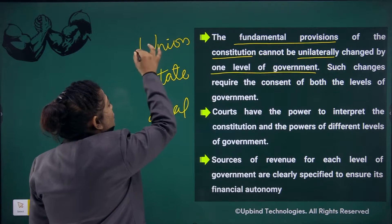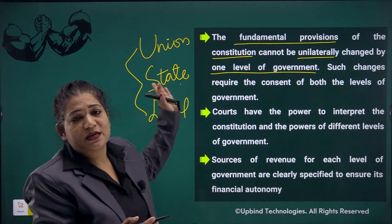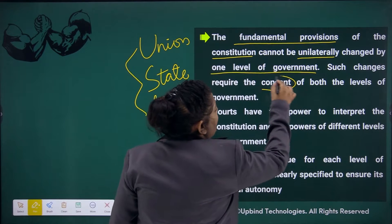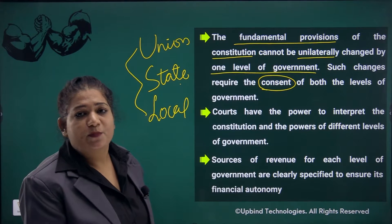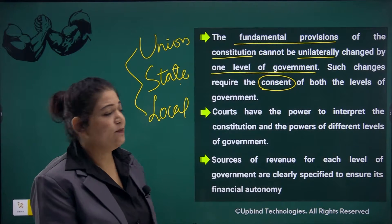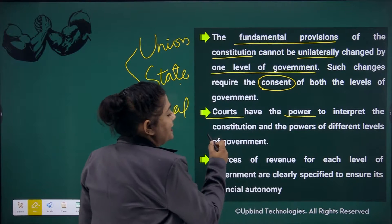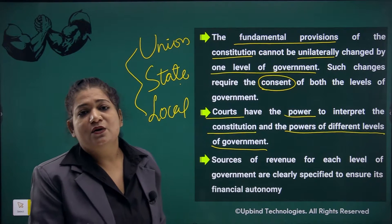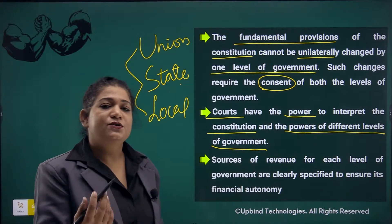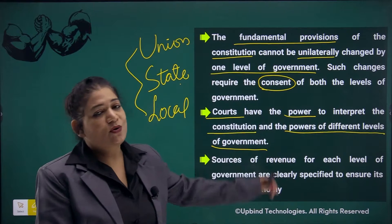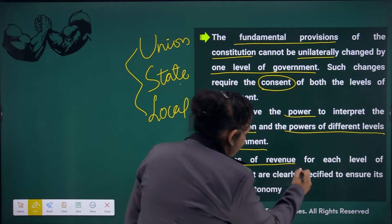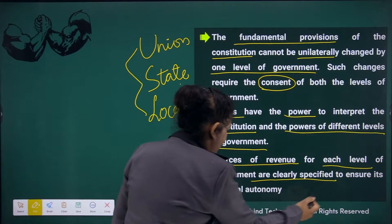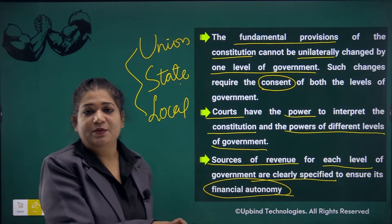Yeh teeno levels mein se koi bhi akela change nahi kar sakta — zaroori nahi hai ki union chahe, ya state chahe, ya local chahe — koi bhi apni marzi se koi bhi change nahi kar sakta. Iske andar sabki consent hona bahut important hai. Chahe power distributed bhi ho, par sabki consent hona utna hi important hai jitna constitution mein amendment karna. Courts ke paas apni power hoti hai ki is constitution ko interpret kar sake, aur jo different level ki government hai unki power ko wo check kar sake.